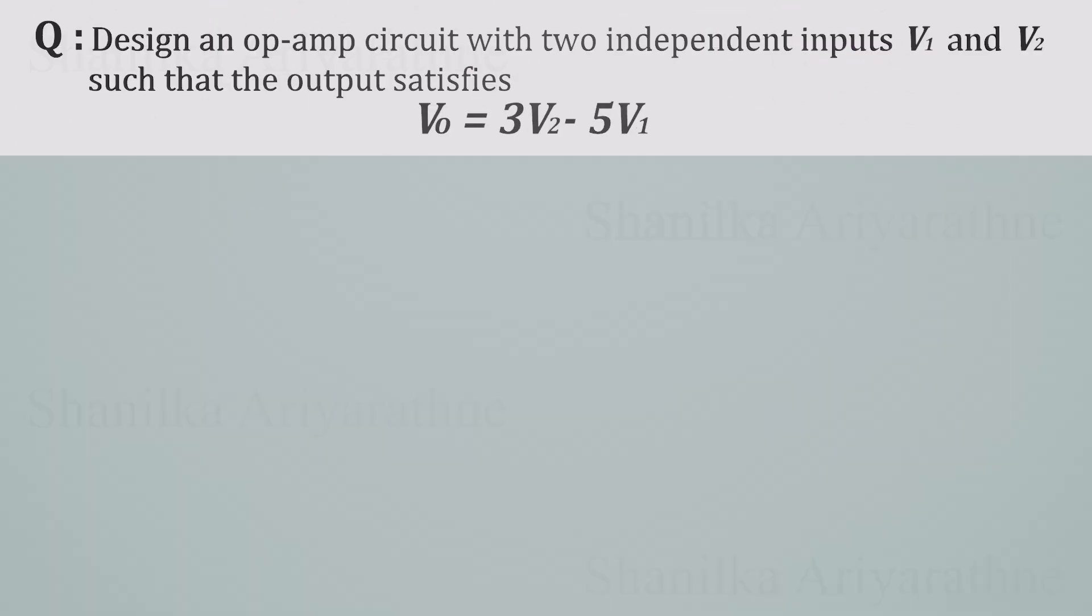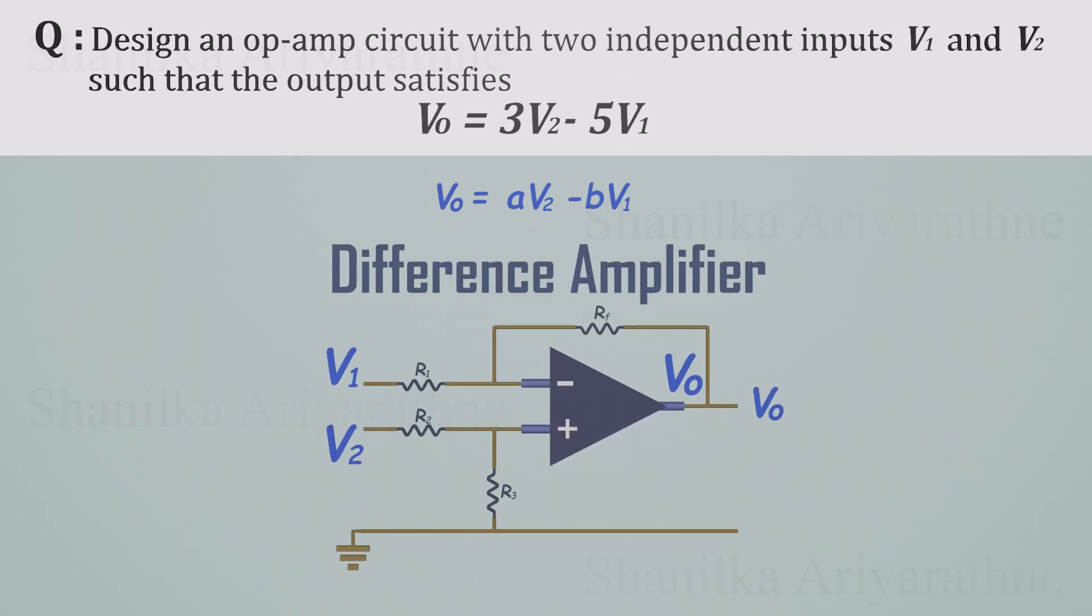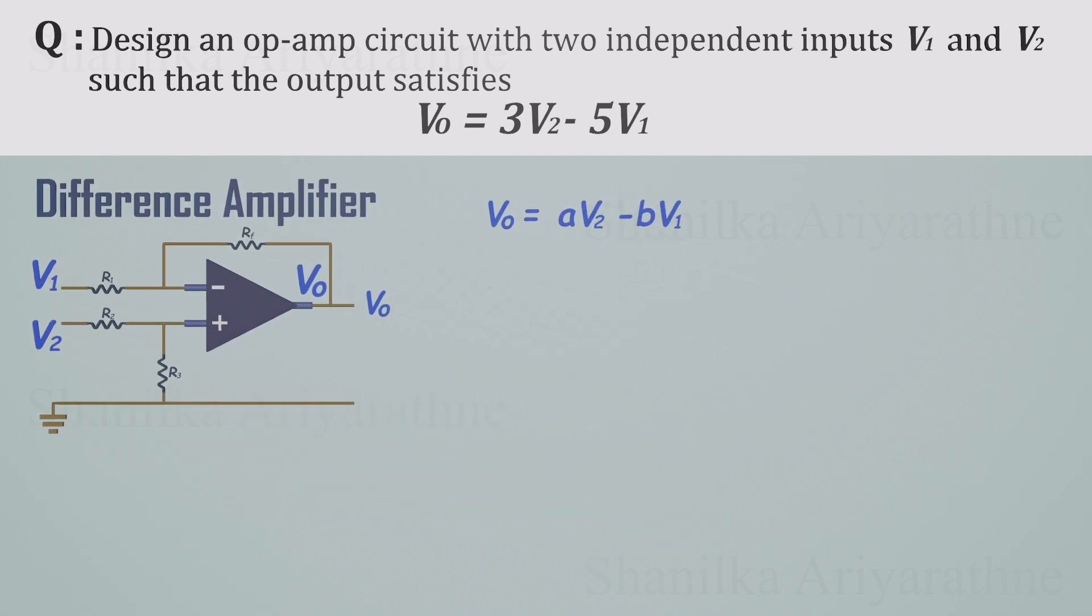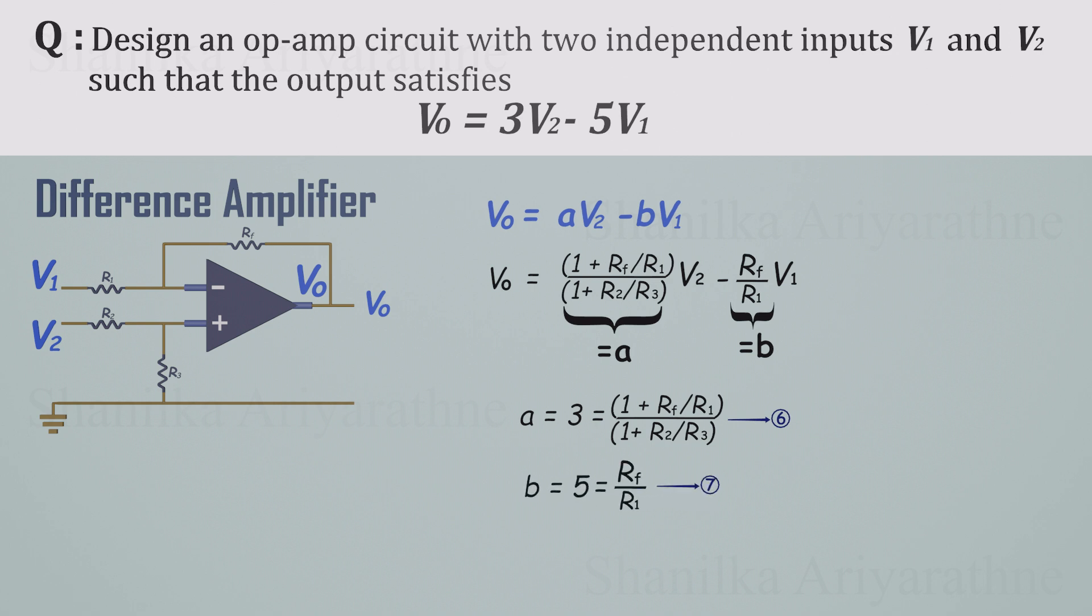Now let's solve an exam-style design problem. We want an op-amp circuit whose output is a weighted difference. Vout equals 3 times V2 minus 5 times V1. That's exactly the AV2 minus BV1 form with A equals 3 and B equals 5. So a difference amplifier is the right tool. Let's start with the standard output for a difference amplifier. It's useful to remember, but you should still be able to derive it from first principles. Our goal is to choose resistor values that produce the required output. In that formula, this part is our A and this part is our B. We want A equals 3. That's our sixth equation. And B equals RF over R1 equals 5. That's our seventh equation.